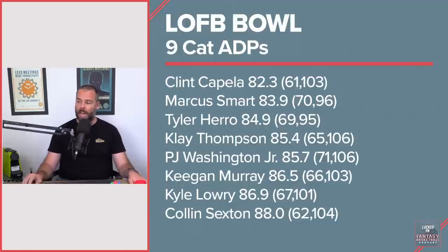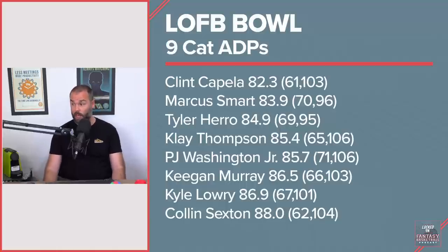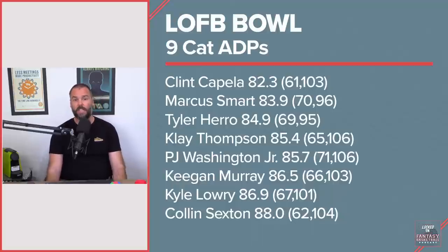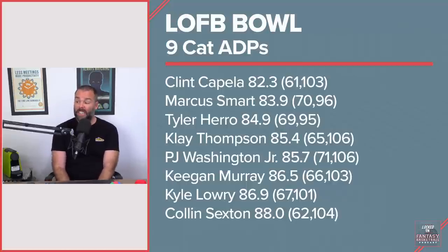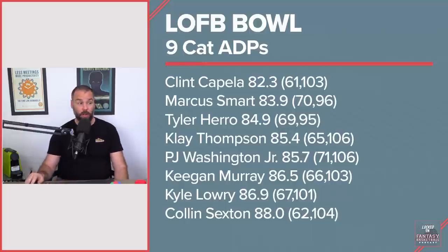Marcus Smart at 84 with a 70 to 96 range, and Hero at 85 with a 69 to 95 range. Klay Thompson at 85 with a 65 to 106 — that is broad. PJ Washington at 86 with a 71 to 106 — PJ Washington at 106 is thievery, absolute thievery. Keegan Murray at 86.5, which feels bang on. He went at 66 in one league, which is high, and 103 in another, which is low.